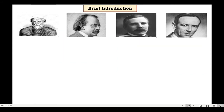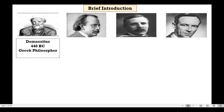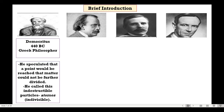Let's have a timeline and a brief introduction to the discoverers of atoms. Starting with the Greek philosopher in 440 BC, Democritus. He speculated that a point would be reached where matter could not be further divided. When that point is reached, that indestructible particle is called atomos — in English, atom — which means indivisible.